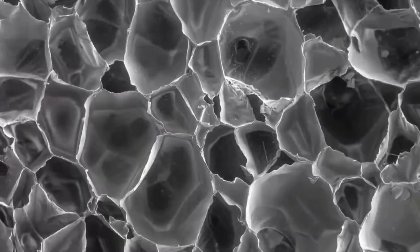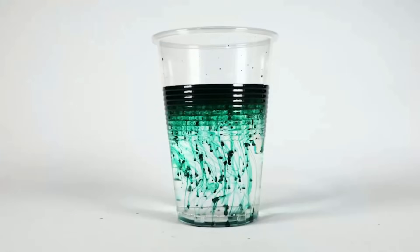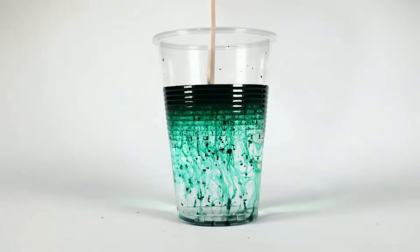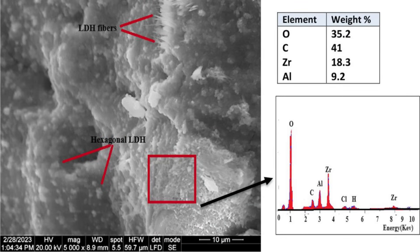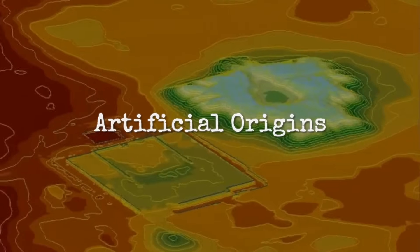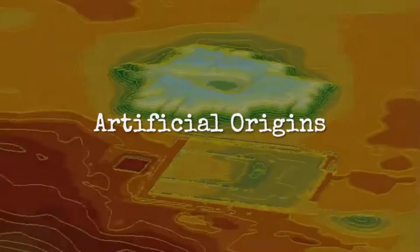When examined under SEM and X-ray diffraction, lab-made replicas show the same density, durability, and sodium signatures as the Puma Punku blocks. The amorphous binder phases, evidence of chemical reaction, are nearly identical. These results point to an artificial process, not sedimentation over millennia.